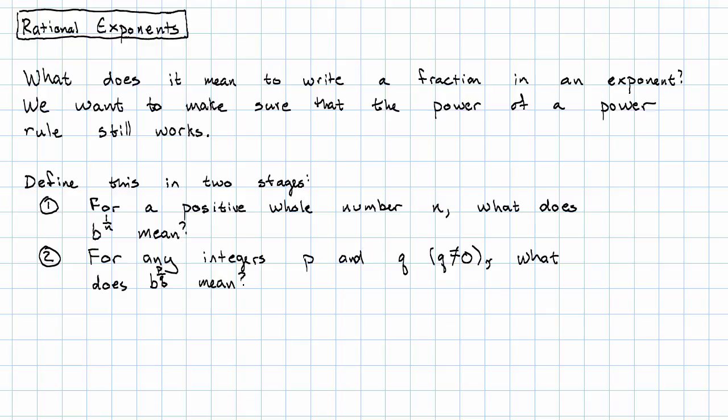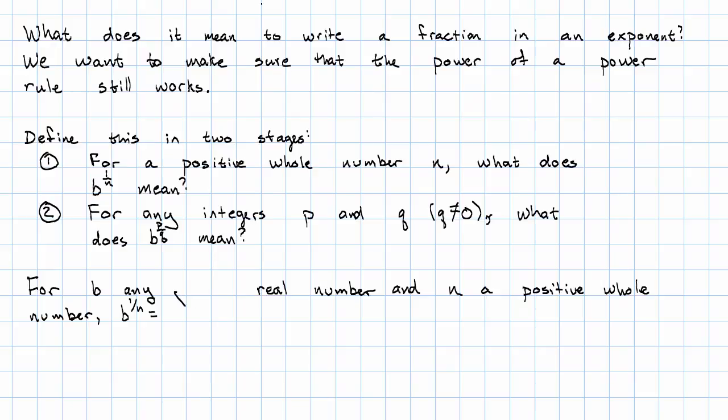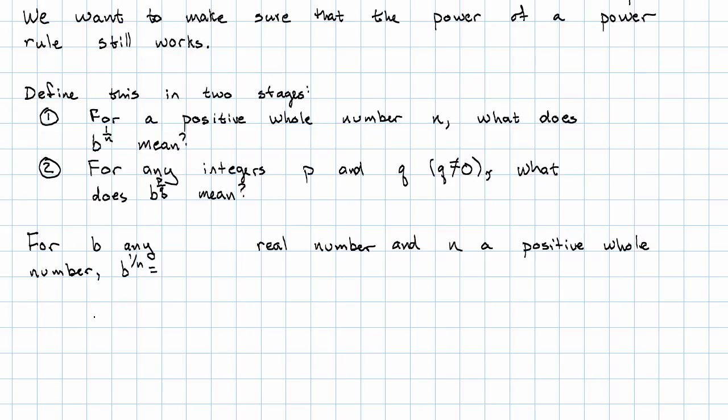Step one. For b any real number and n a positive whole number, what is b to the 1 over n? In order to figure out the answer to that, I'm going to consider what happens if I take b to the 1 over n to the nth power. That says I'm going to take b to the 1 over n times n is n over 1. I'll have b to the n over n is just b to the first power. So that's just b.